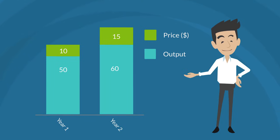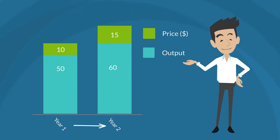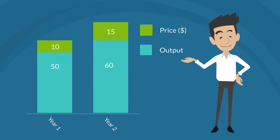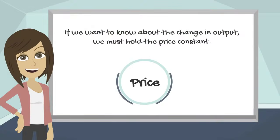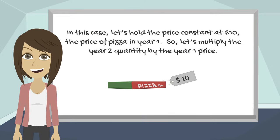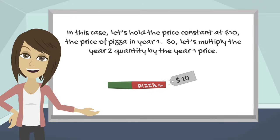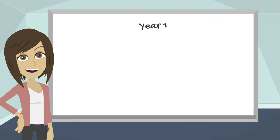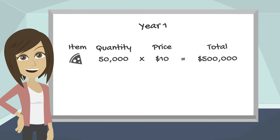In other words, because part of the increase in income from year 1 to year 2 was due to rising prices, you need to account for changing prices to discover how much of the increase in GDP was due to higher output. If we want to know about the change in output, we must hold the price constant. In this case, let's hold the price constant at $10 — the price of pizza in year 1 — and multiply the year 2 quantity by the year 1 price. Year 1: 50,000 pizzas multiplied by $10 equals $500,000. Year 2: 60,000 pizzas multiplied by $10 equals $600,000.